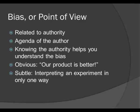Bias is related to the author and his, hers, or their agenda. Knowing this helps you better understand the bias. Sometimes the bias is very obvious, as when a commercial website selling a product promotes their product as better than all the competitors. Other times the bias is subtle. You could find an online web journal article where a researcher conducts an experiment and interprets the results in only one way. By not offering different reasons for the results, the author is biased towards only one explanation.